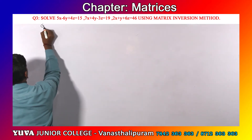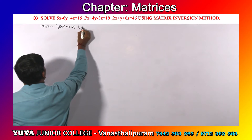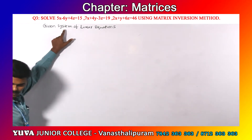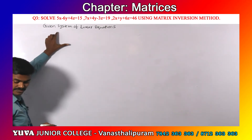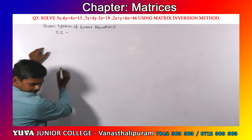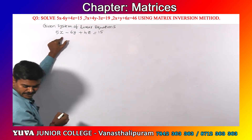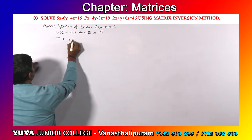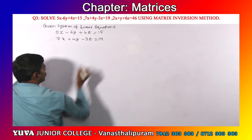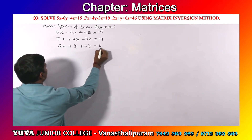Let us first write the given system of linear equations. We will be given three equations to solve. First equation: 5x minus 6y plus 4z equals 15. Second equation: 7x plus 4y minus 3z equals 19. Third equation: 2x plus y plus 6z equals 46.